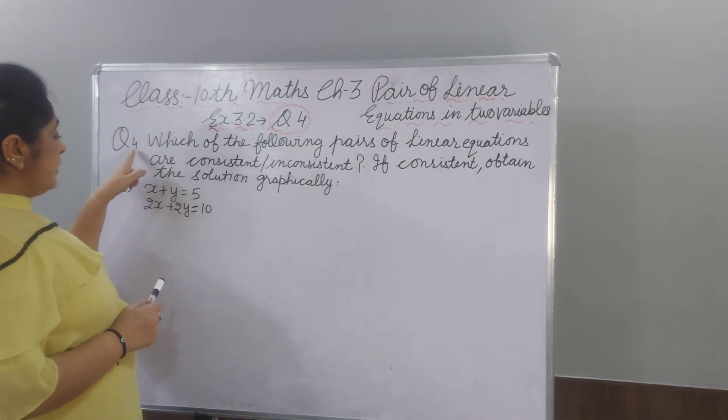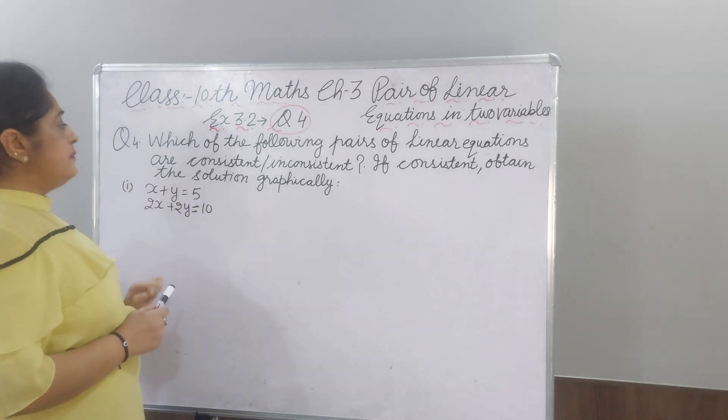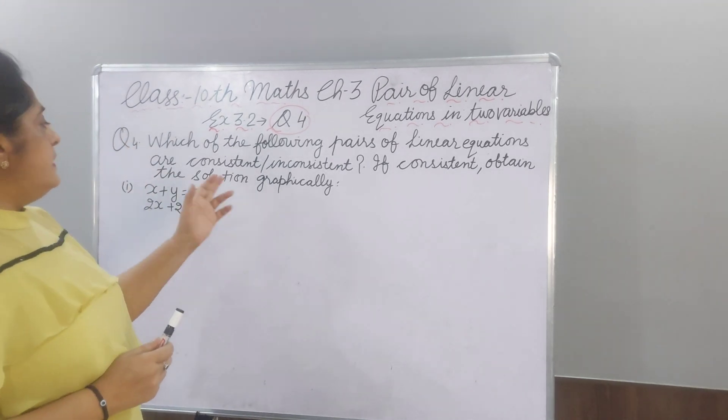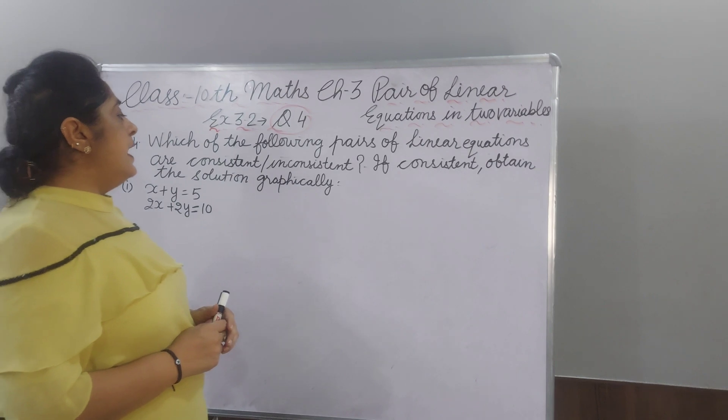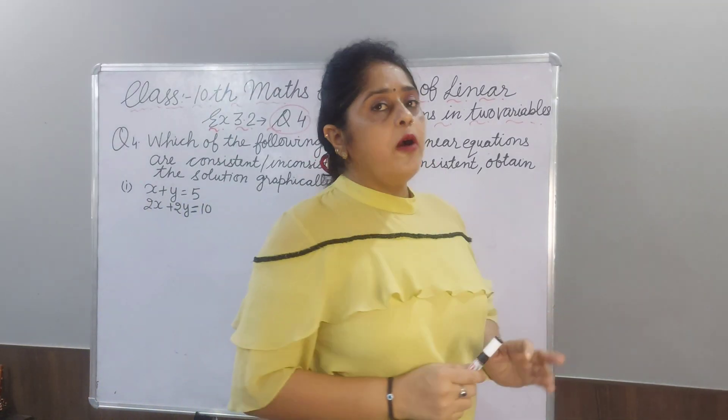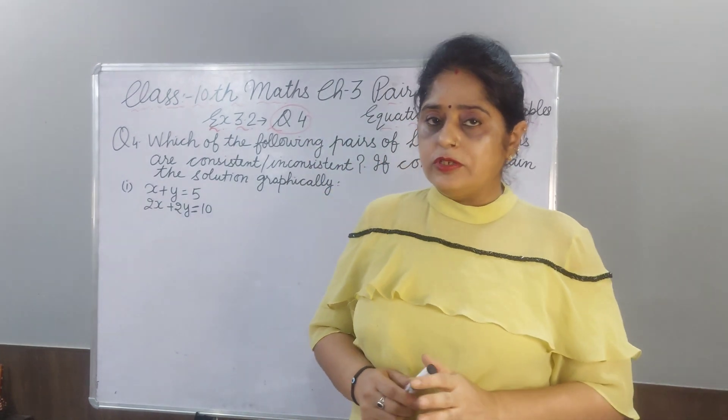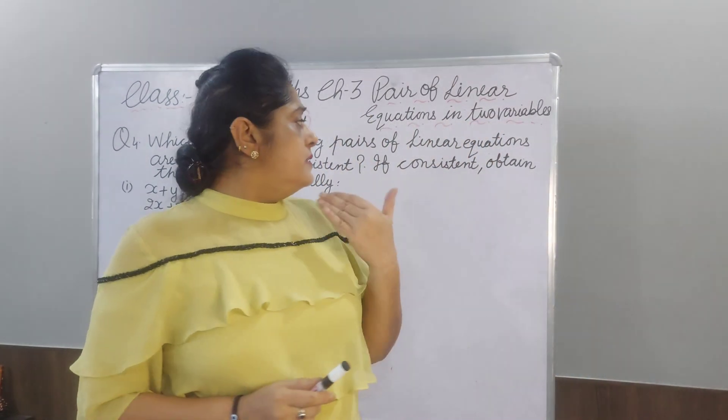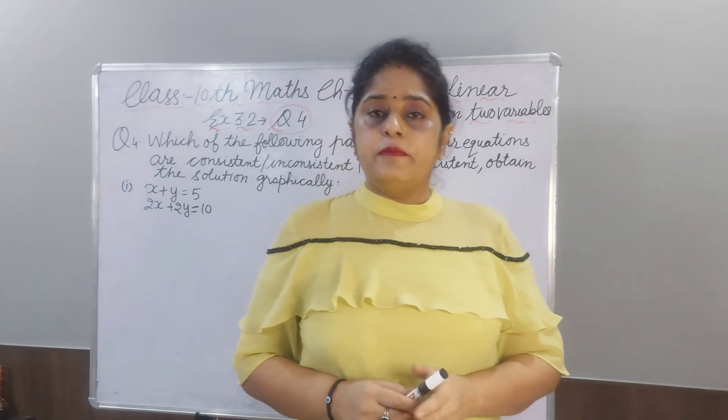First, question number 4, what is the statement? Which of the following pairs of linear equations are consistent and inconsistent? If they are consistent, then obtain their graphical solution. If they are inconsistent, then you have to not make the graph.